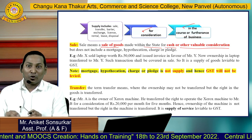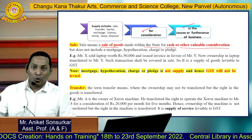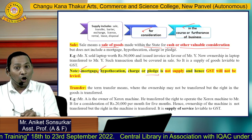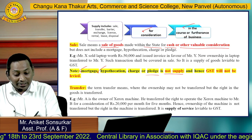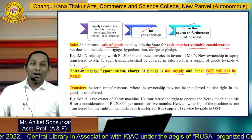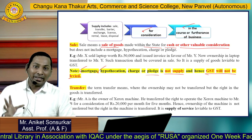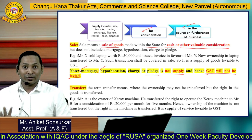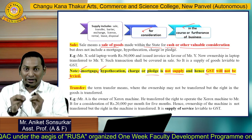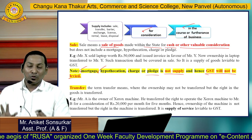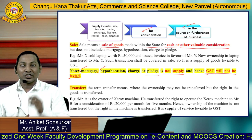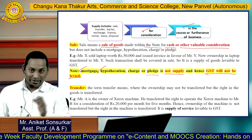An important point to remember: any mortgage, hypothecation, charge, or pledge is not called a supply, and hence GST will not be levied. The key point is that consideration must be receivable — if you sell anything or provide any kind of services, consideration must be received for it to qualify as supply. In the next session, I will share the details of Schedule 1, Schedule 2, and Schedule 3 activities. Thank you so much.